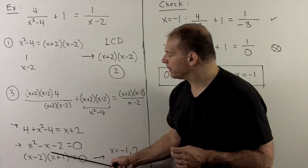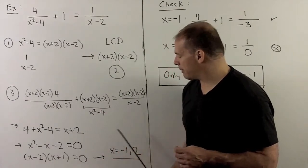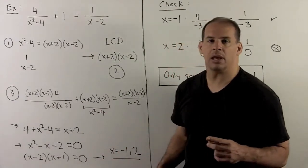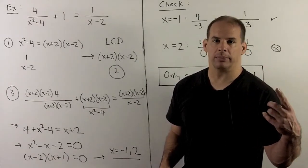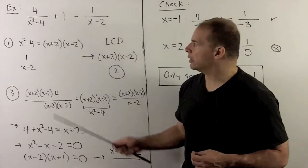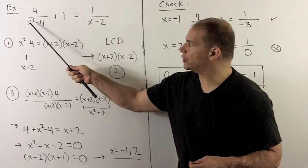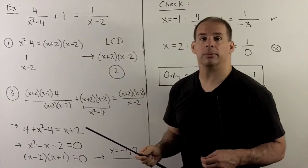Our solutions are x equal to 2 and x equal to minus 1. I don't want to put a box around that just yet. I have to check each solution. We know here, numbers that could be problems would be 2 or minus 2. Let's check.